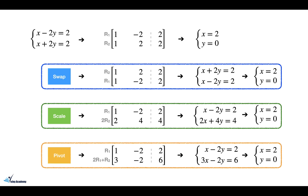The third operation is pivoting. In this example, the first row remained unchanged and the second row is replaced by the summation of the second row and two times the first row. We have a new system of equations and if you solve it you would get the same answer as the original system of equations.